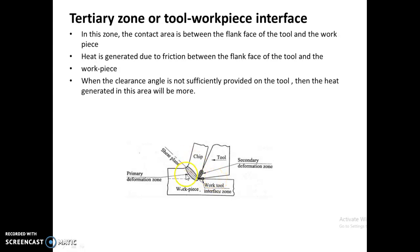So summarizing the three zones: around 80 to 85 percent of heat is generated in the primary zone, 15 to 20 percent of heat is generated in the secondary zone, and 1 to 3 percent of heat is generated in the tertiary zone.